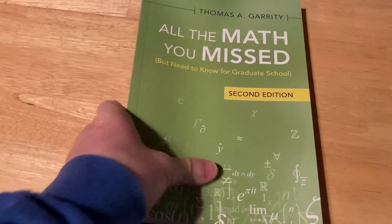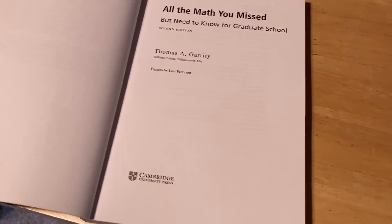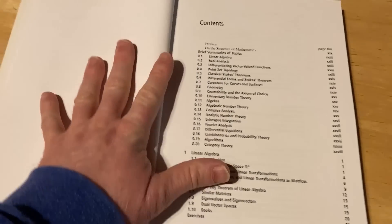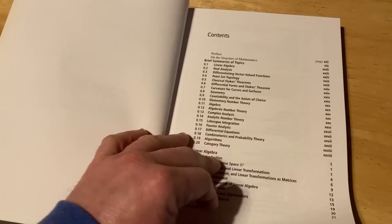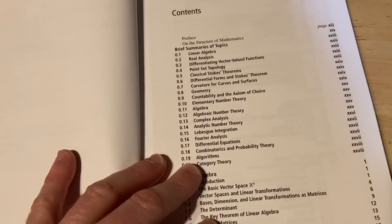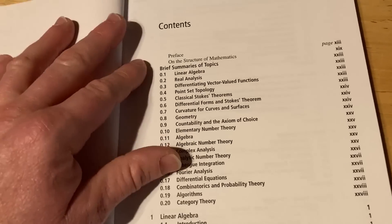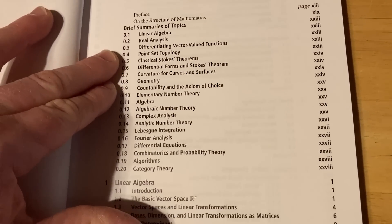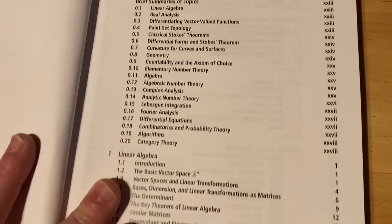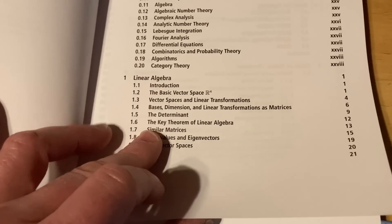This is the book I was telling you about that gives you an overview of all kinds of different math. It's not going to teach you everything, but it covers a lot of topics. The target audience is prospective graduate students — it's supposed to give you a rundown of all the mathematics you're supposed to have seen before going to grad school. Nobody has seen all this math, but this gives you an overview of all the different areas of mathematics, many of which most people have never seen.